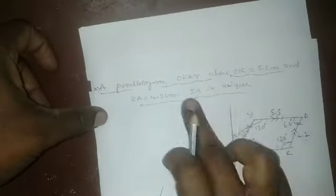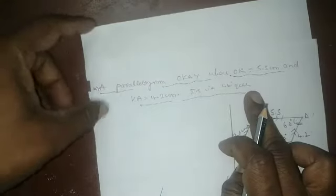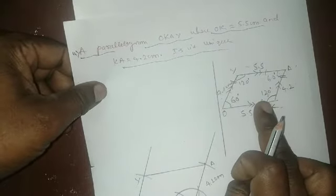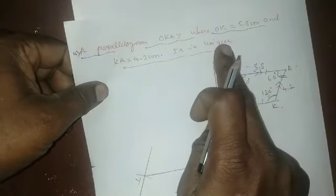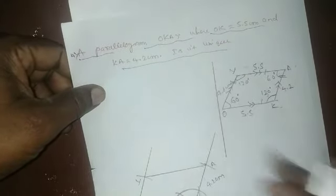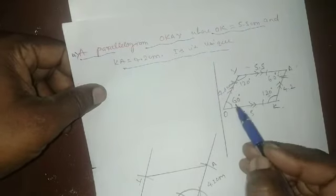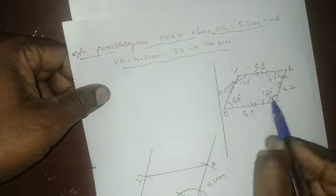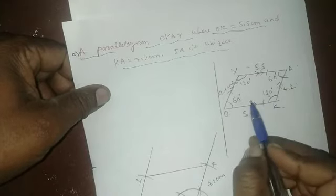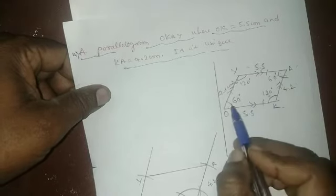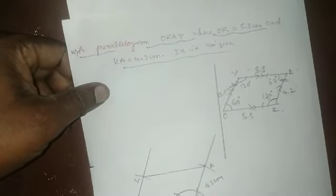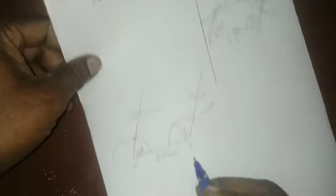They have asked: is it unique? We assumed 60 degrees at one angle and 120 degrees at the other. Is it unique? No. You can change the angle, but adjacent angles in a parallelogram must be supplementary, that is, equal to 180 degrees.